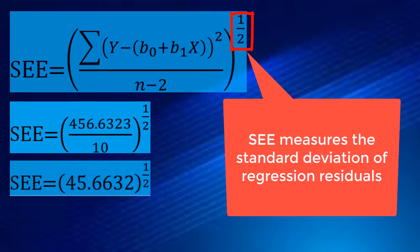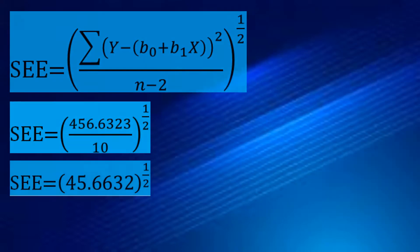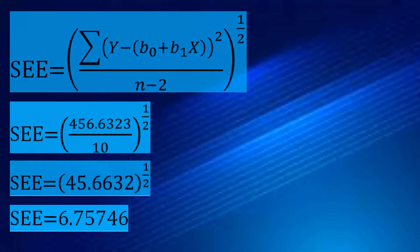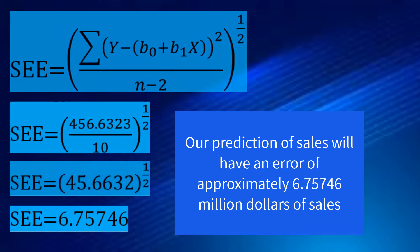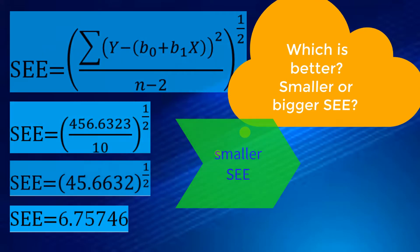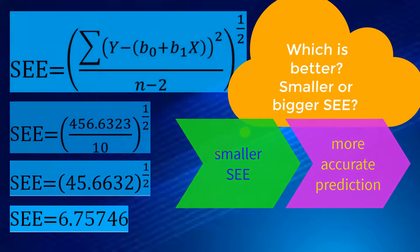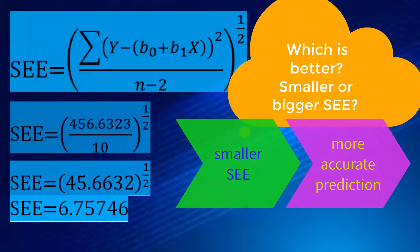The result is 45.6632, raised to the power of one-half — meaning we take the square root — which means SEE measures the standard deviation of regression residuals. The square root is also needed to keep the result in the same units as the dependent variable y. The square root of 45.6632 is 6.75746, our standard error of estimate. This means that our prediction using the regression equation will have an error of approximately 6.75746 million US dollars. A smaller standard error of estimate — for example 3 million — is much better than 6.76 million, meaning prediction is more accurate.